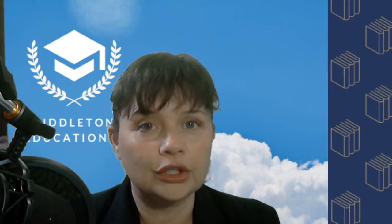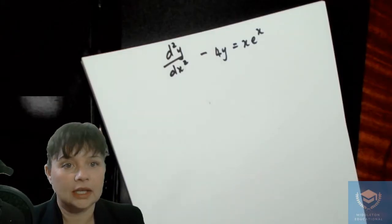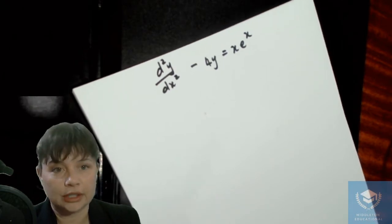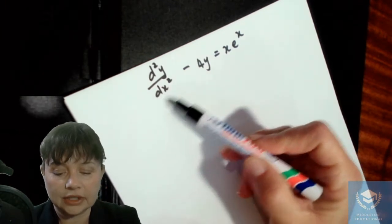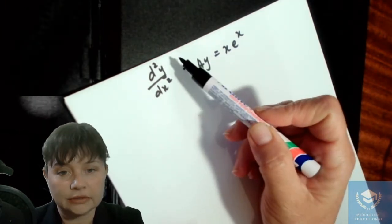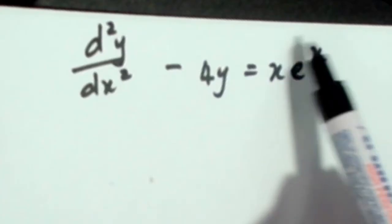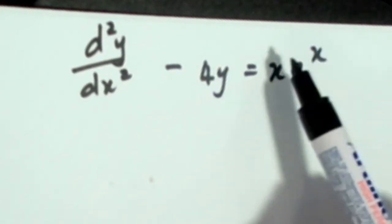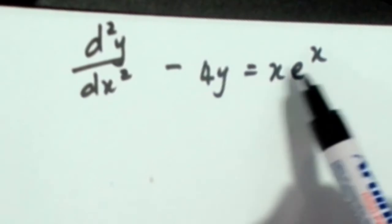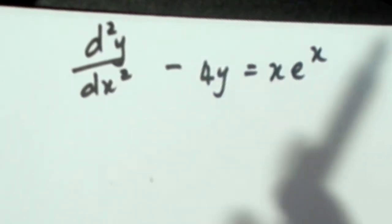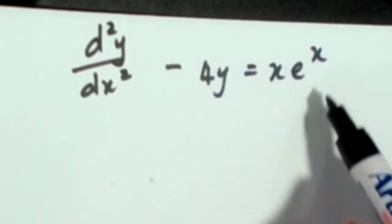Hi everyone, welcome back. Let's have a look at another example of how to solve a second order non-homogeneous differential equation. Here's our differential equation. We know it's second order because the highest derivative is the second derivative of y. It's non-homogeneous because it equals some function. This one is different from before because here you've got a product of functions, and we'll come to that when we solve our particular integral.